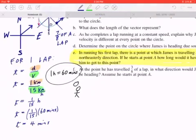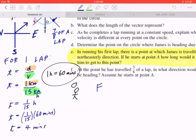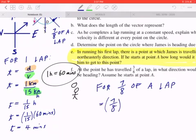So, since you know it takes 4 minutes for 1 lap, this means for 7 over 8 of a lap. This equals 7 over 8 times 4 minutes.